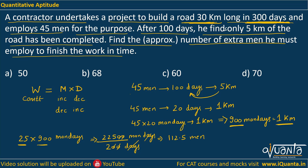Earlier there were 45 men employed; now there are 112.5 men required. So the extra number of men = 112.5 − 45 = 67.5, which is approximately equal to 68 — option B is the correct answer. We have discussed both approaches. If there is any doubt, please comment. Thank you for listening.